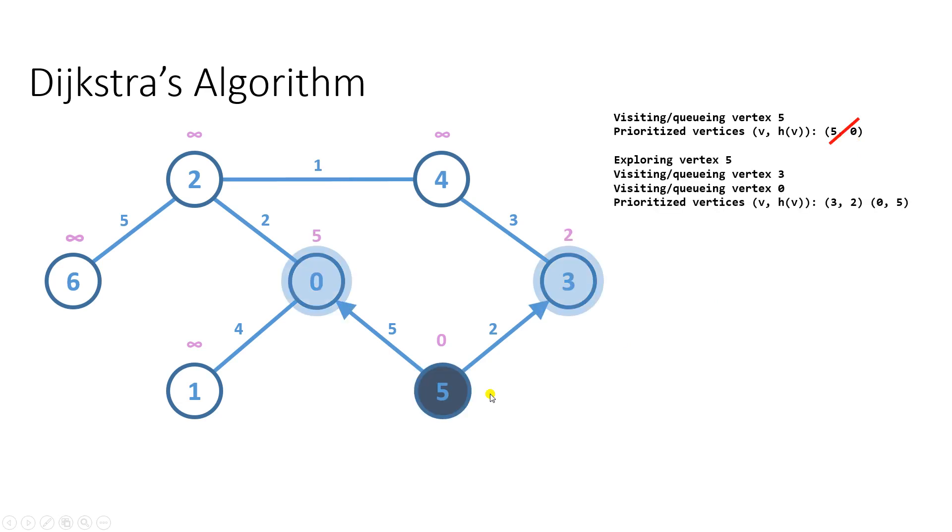After we explore vertex 5, marked in dark blue color, it gets removed as indicated by the red line from the priority queue, and its children vertices, vertices 0 and 3, are added to the priority queue, and their priorities are calculated.